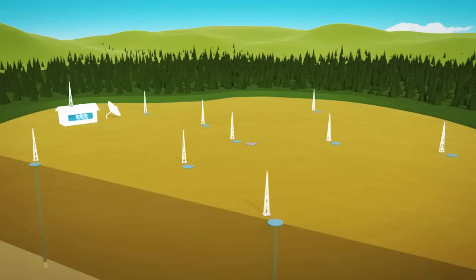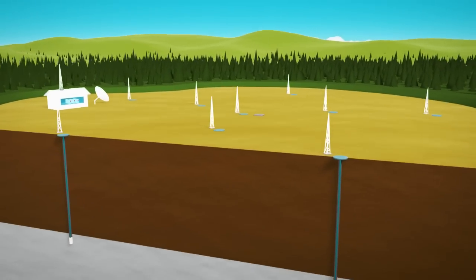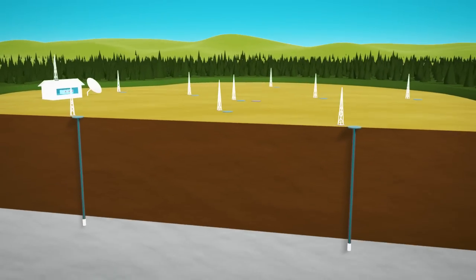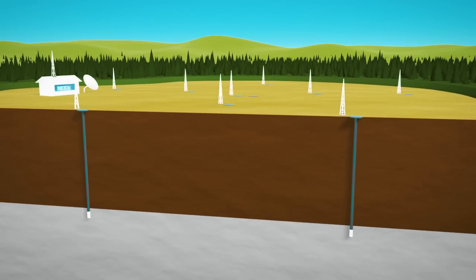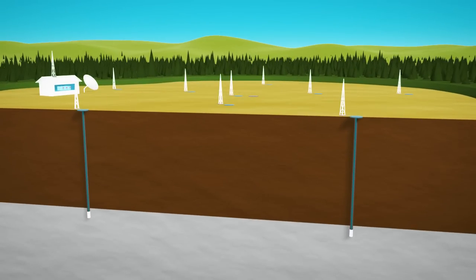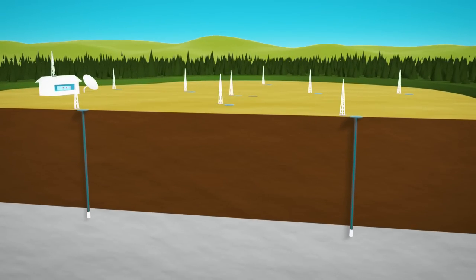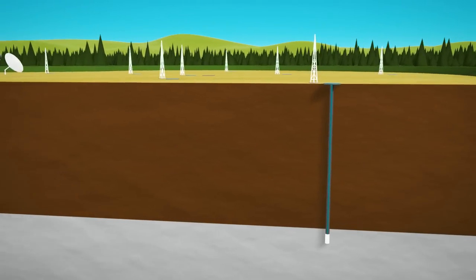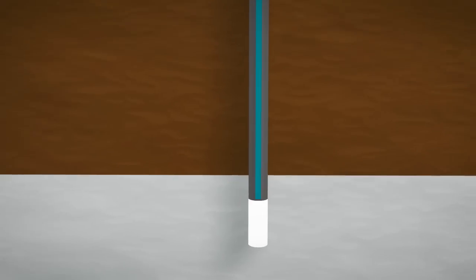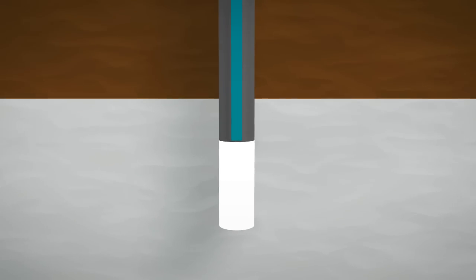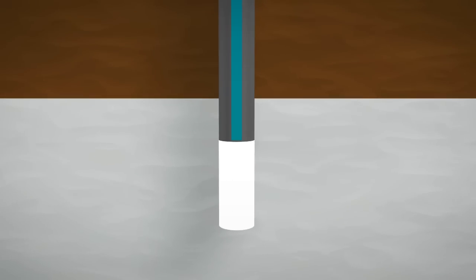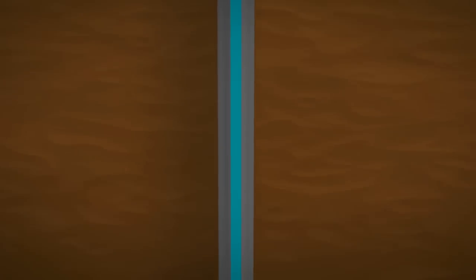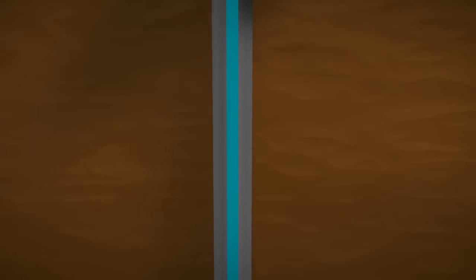A seismometer needs to be connected to solid rock to detect seismic waves most efficiently. At this station, seismometers are deployed at the bottom of boreholes. These boreholes can be up to 100 meters deep.